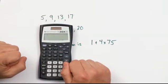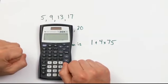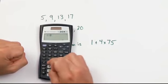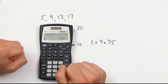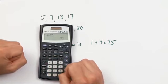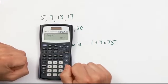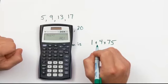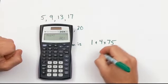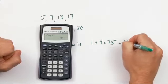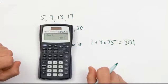I'm going to use my calculator and order of operations. 4 times 75 equals 300, and 300 plus 1 is 301. So the 75th figure in the pattern would have 301 blocks in it.